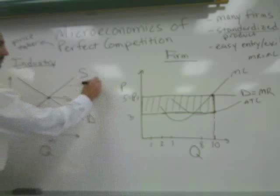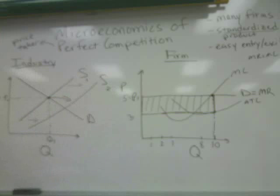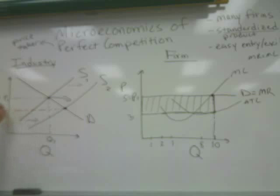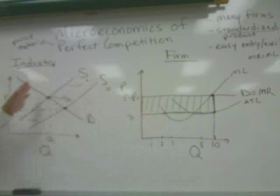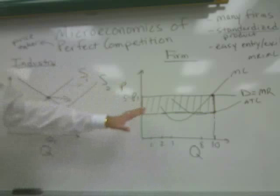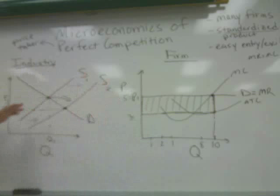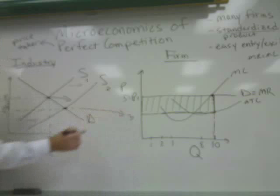The market supply curve is going to shift from supply one to supply two. There is a new equilibrium in the industry, and this equilibrium is going to produce price two, which is a lower price than the former equilibrium at price one. Because the firms that make up the industry are price takers, the firms are going to take this new price, which is price two.